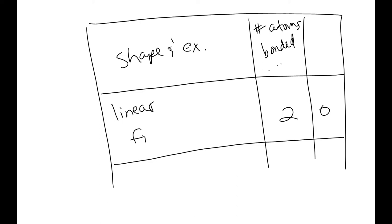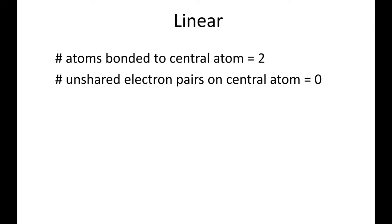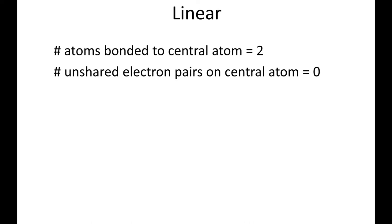So the first one that we're going to put in that table is the linear one. The linear shape: the number of atoms bonded to a central atom is two. This means there are three atoms total, because you have your central atom and then two more, one on each side. And then the number of unshared electron pairs on the central atom is nothing, is zero.